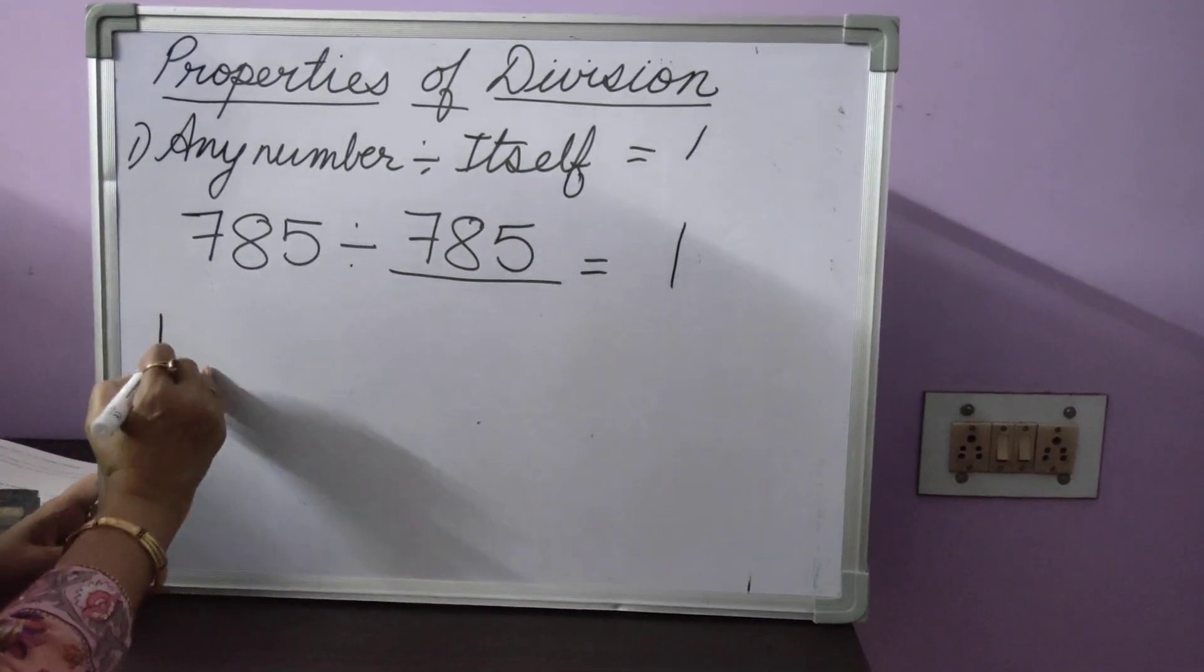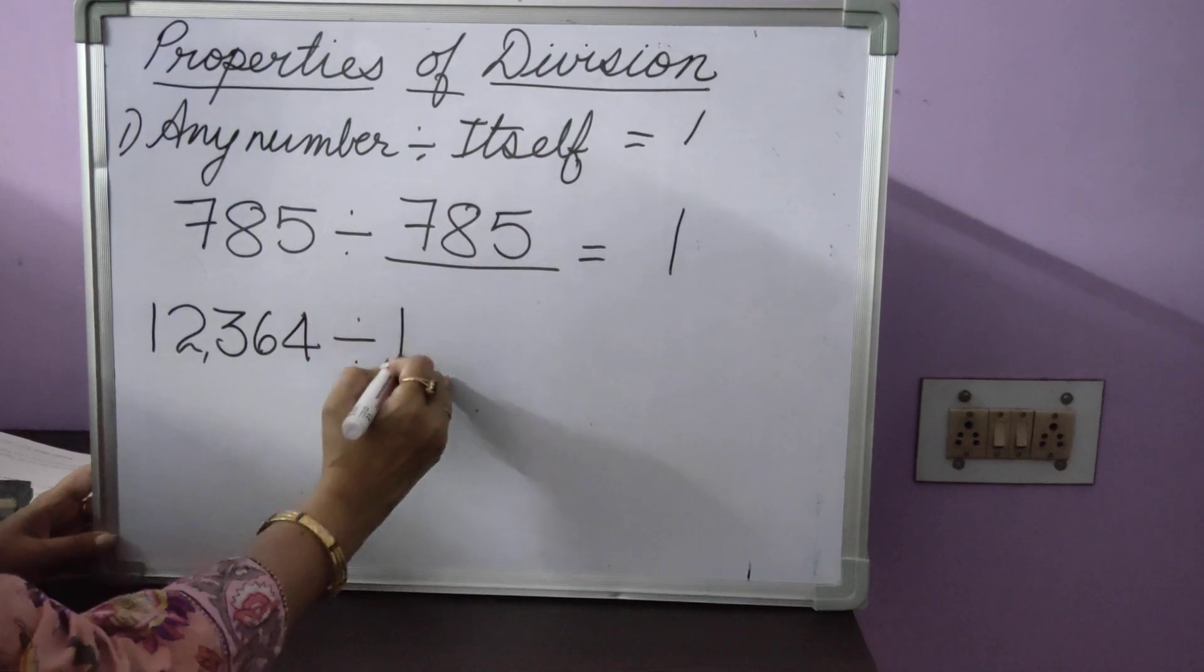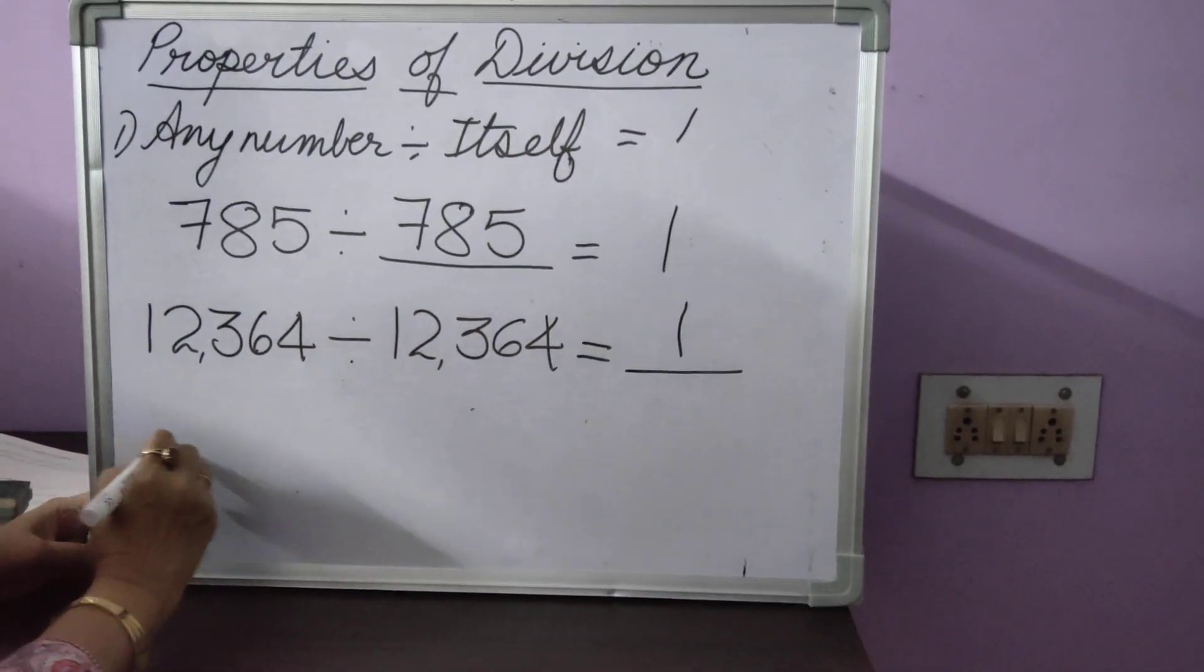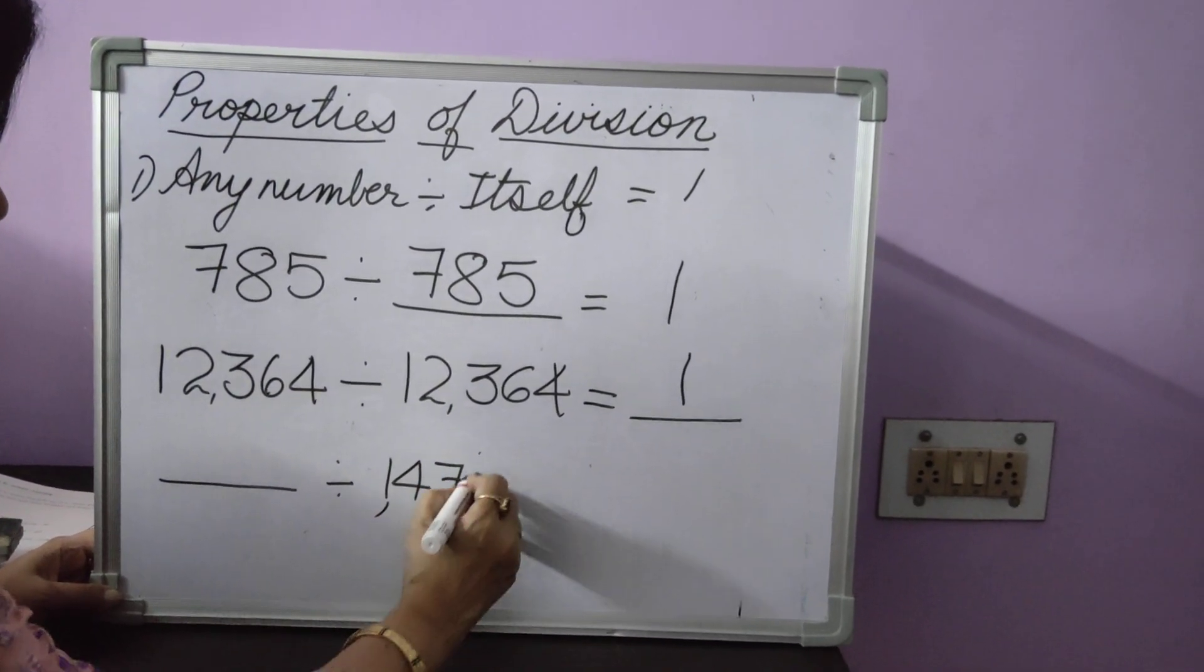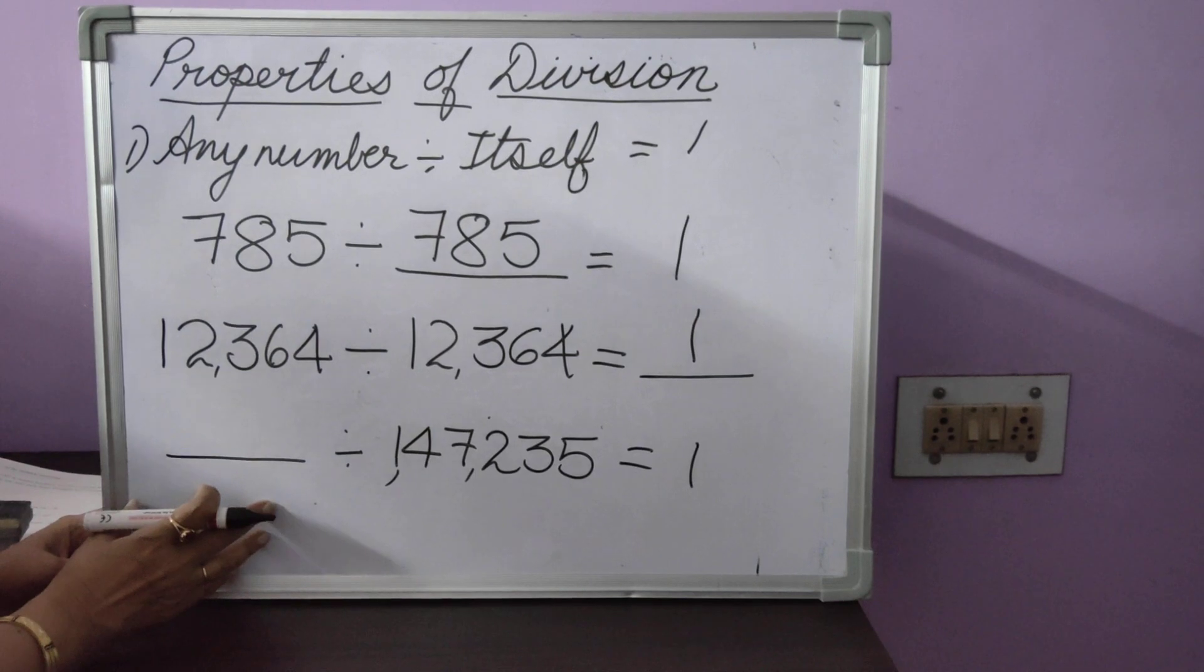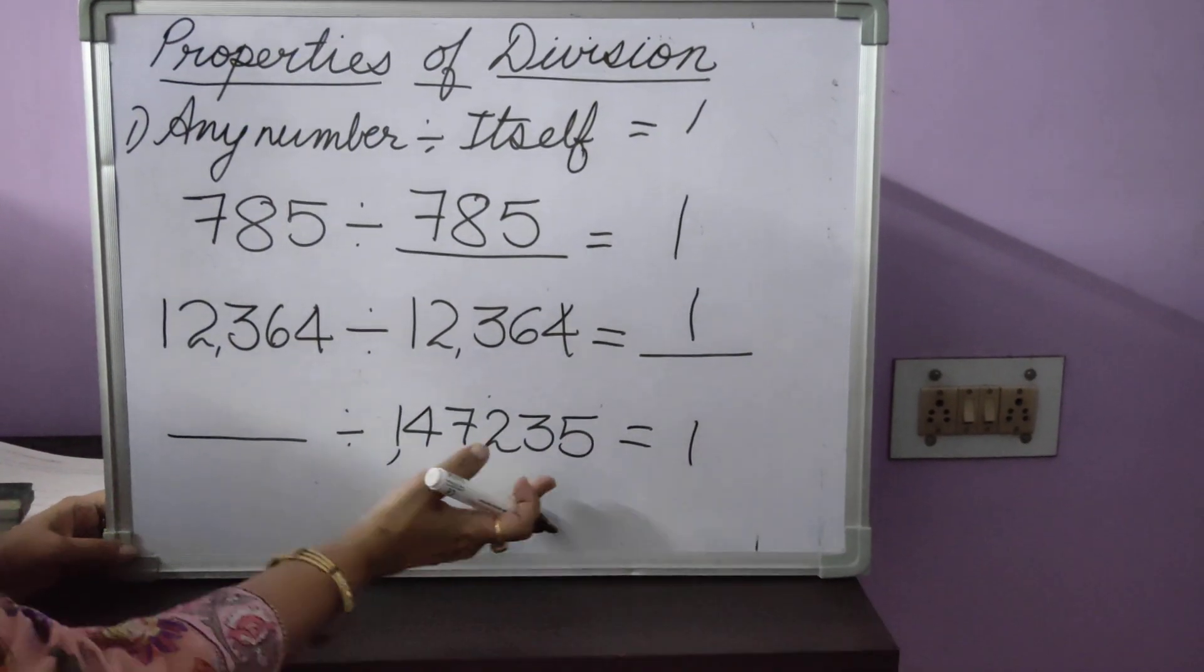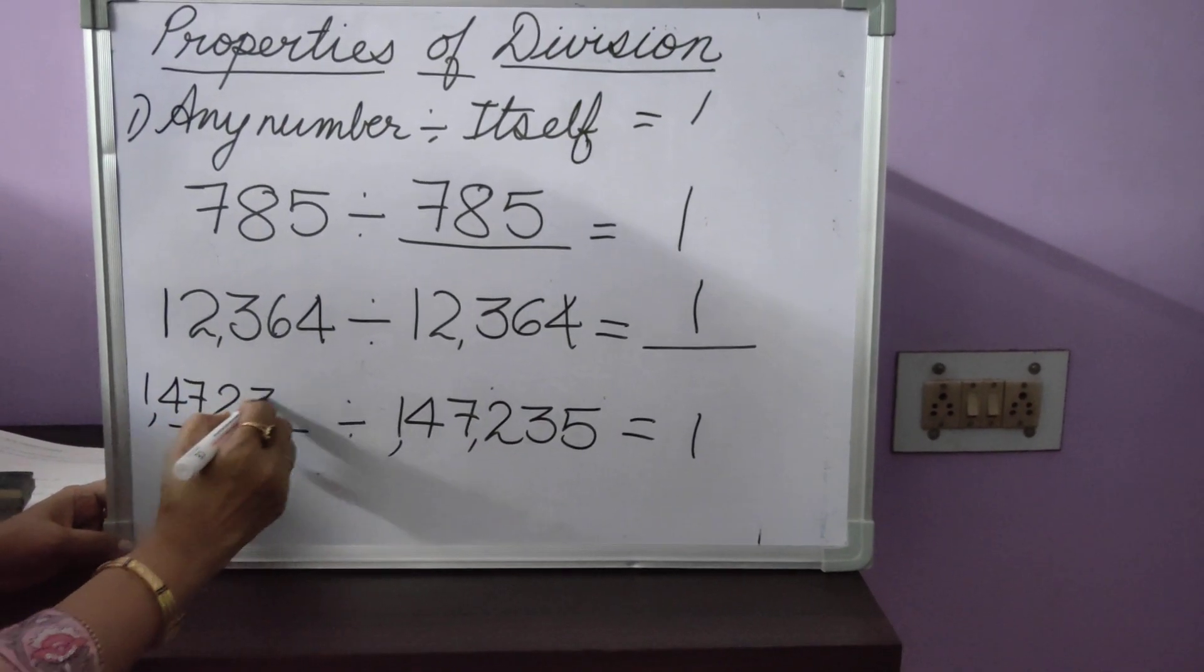In the same way, 12,364 divided by 12,364, what will be the missing number? 1. Same way, your missing number divided by 1,47,235 is equal to 1. Now, we have some number, which if we divide by 1,47,235, that gives you the answer as 1. That means what? It has to be the same number 1,47,235.